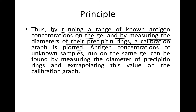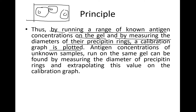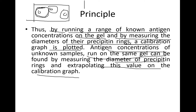After performing the experiment and observing the rings, a standard curve is plotted on graph paper, allowing us to determine the antigen concentration of unknown samples as well. Antigen concentrations of unknown samples run on the same gel can be found by measuring the diameter of the precipitating rings and extrapolating this value on the calibration graph.